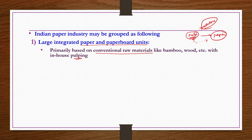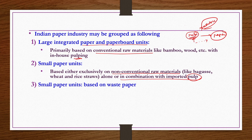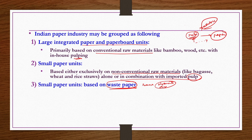Small paper units are either exclusively based on non-conventional raw materials like bagasse, wheat straw, rice straw, etc., alone or in combination with imported pulp from other pulp industries. Another category is small paper units based on waste paper alone — not on fresh raw material whether conventional or non-conventional. That waste paper must have pigments, dirt, and other impurities removed, then it is re-pulped to make paper. Since availability of waste paper is limited, the size of these units is also limited.